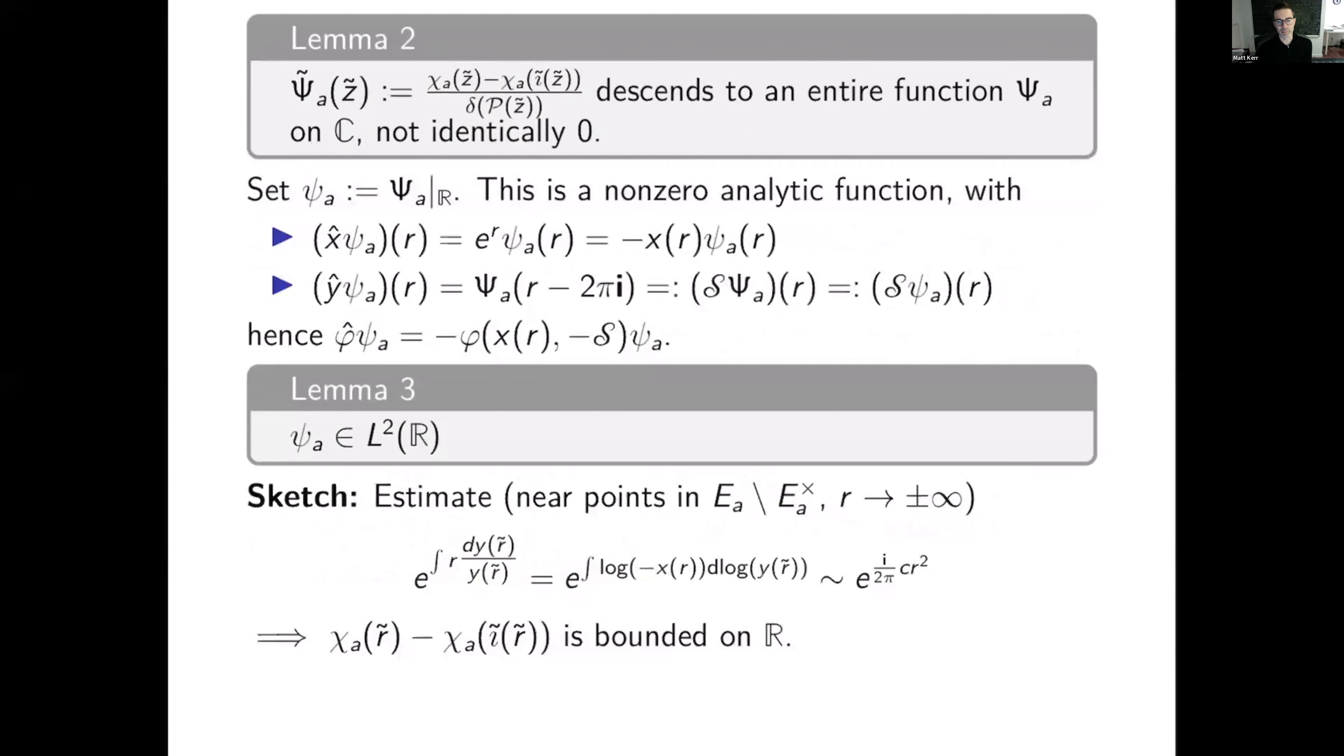Lemma 3. Psi a is in L2. So we estimate near points in the boundary, as r goes to plus or minus infinity, that the regulator term in the integral looks like i over 2 pi cr squared. And so that just tells me this exponential oscillates a lot. It doesn't go to infinity or anything. And so that means the numerator here is bounded on r. The denominator, on the other hand, is dominated by e to the plus or minus r over 2. And so we get this bounding of our putative eigenfunction. And so now all that's left is to show that it's an eigenfunction.